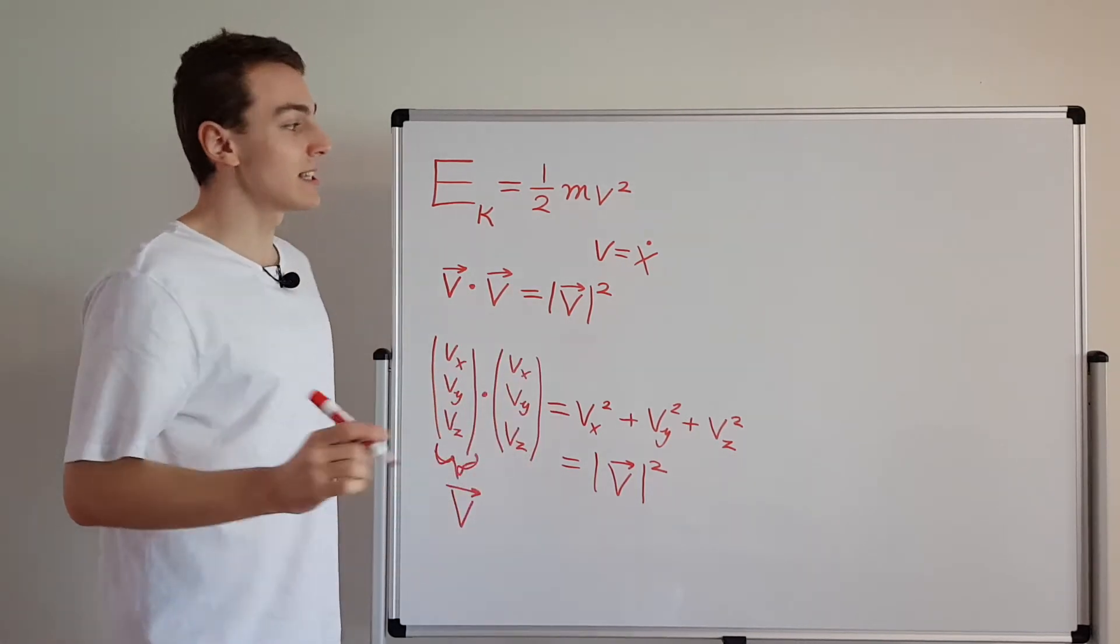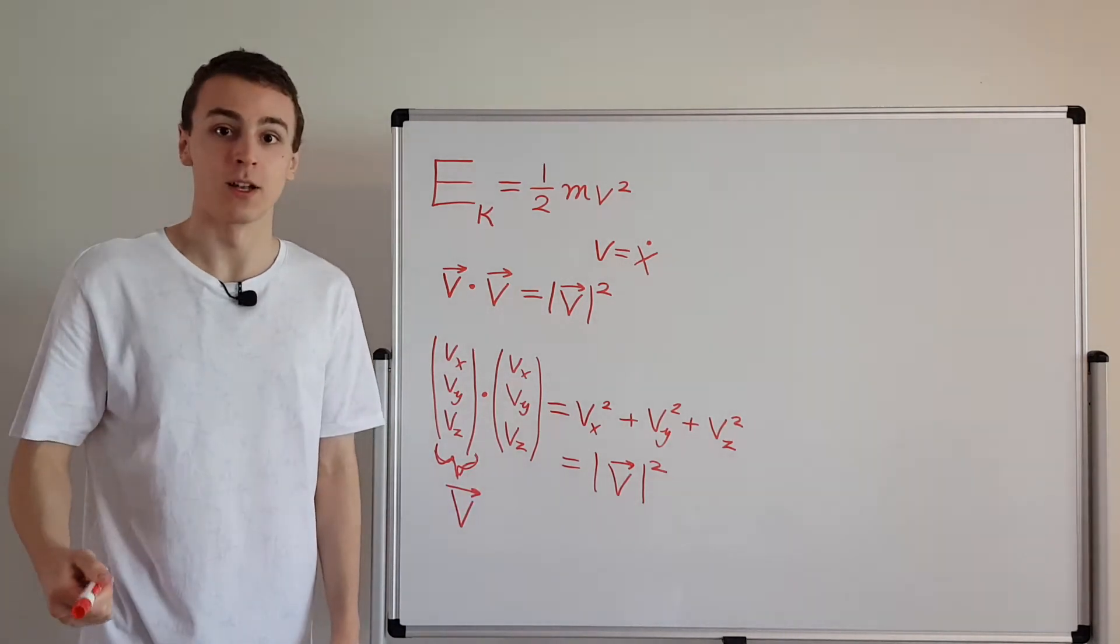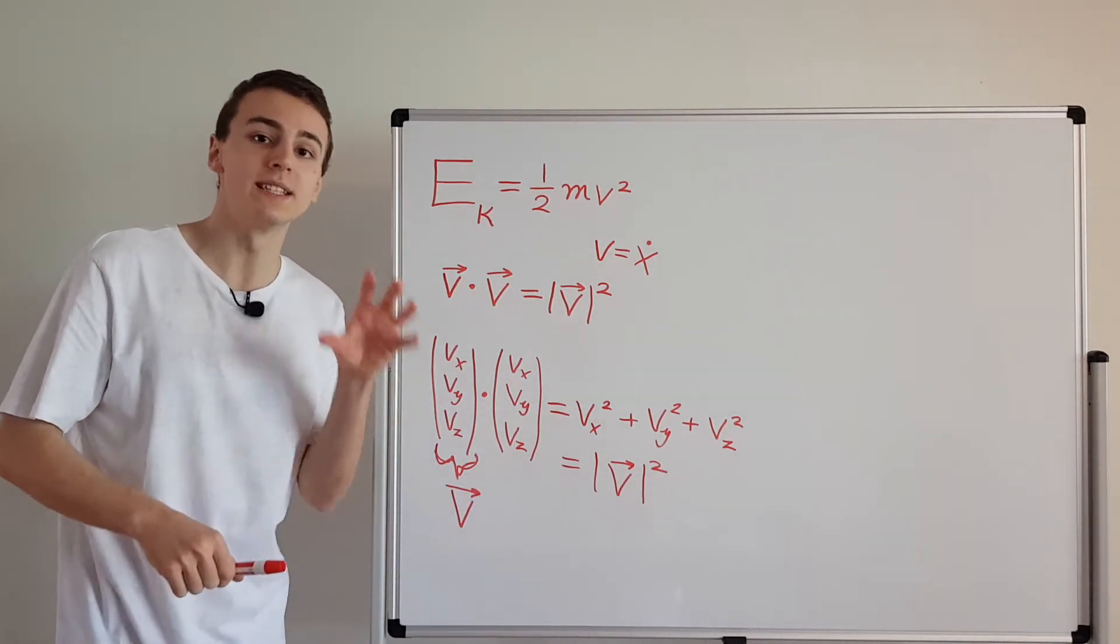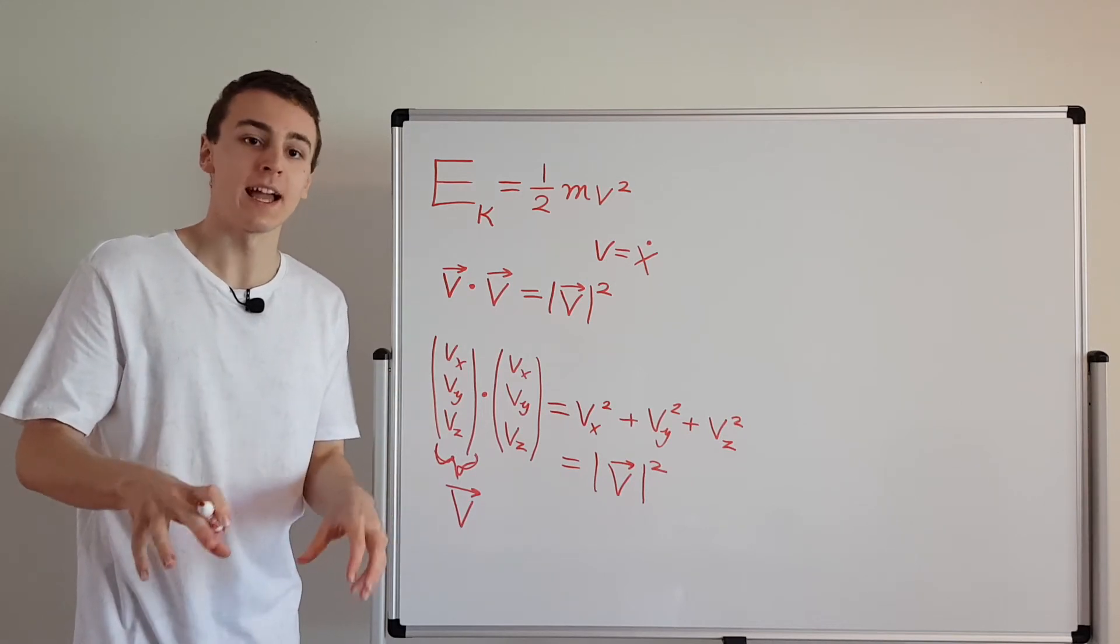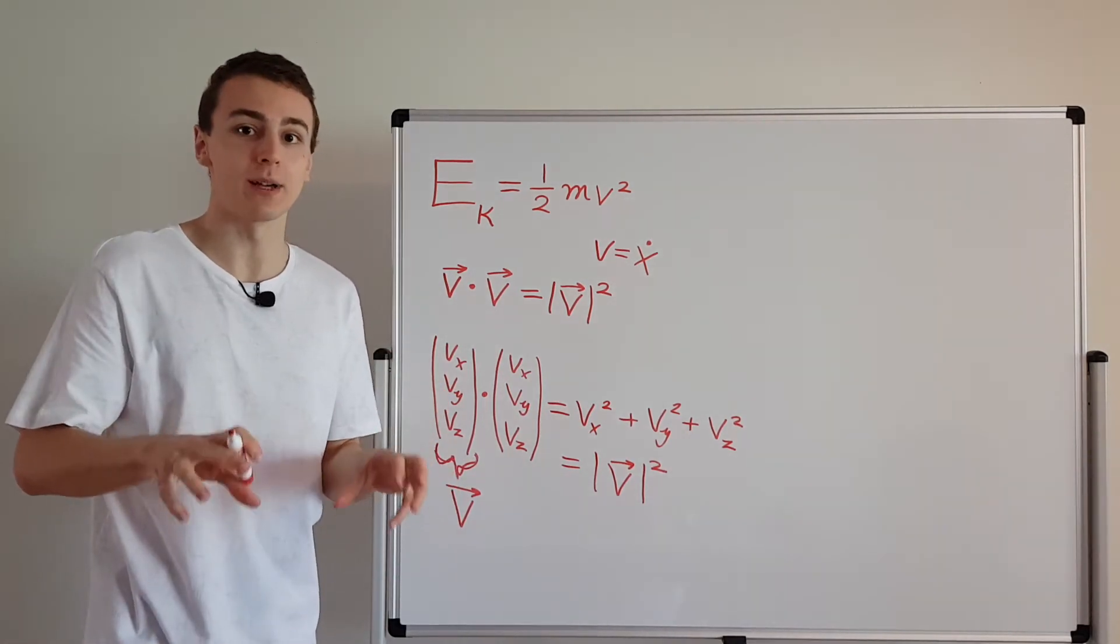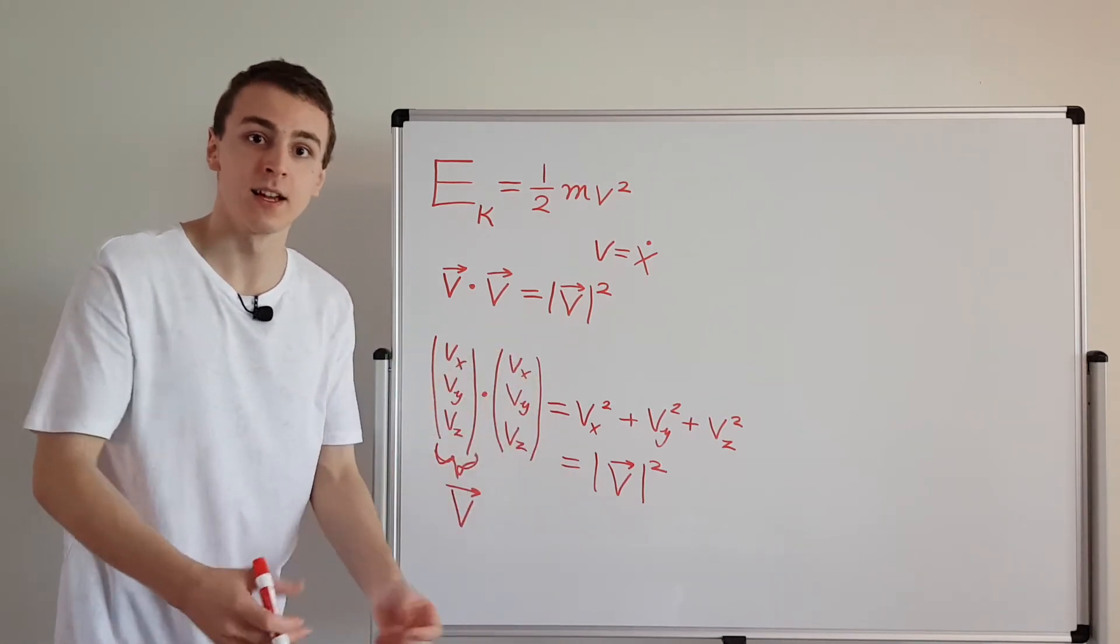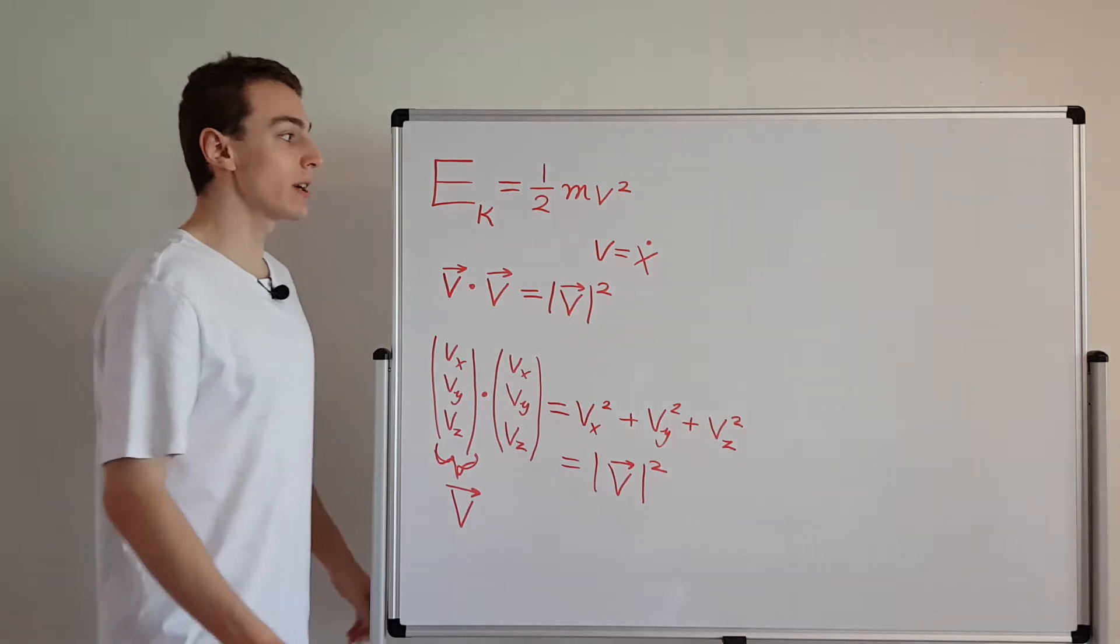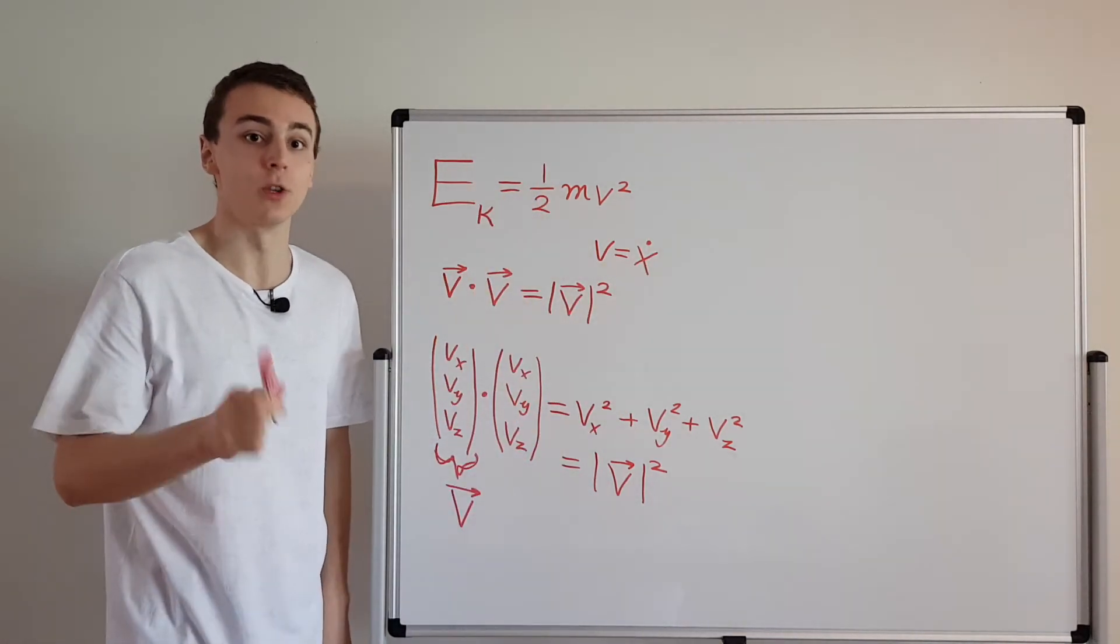But here's the thing: in Hamiltonian mechanics we prefer to deal with momentum, not velocity, because position and momentum have a special relationship. This special relationship in Hamiltonian mechanics between position and momentum gets carried over to quantum mechanics. So in quantum mechanics we want to express the kinetic energy in terms of momentum, not velocity.